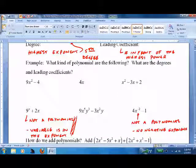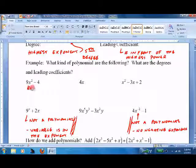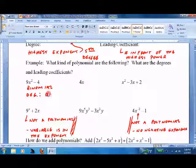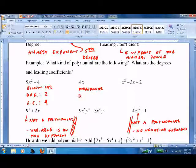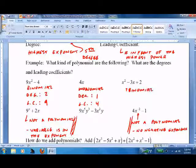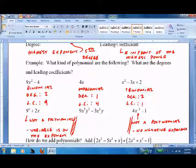Which ones are polynomials? Well, all the other four are polynomials. This is a binomial with a degree of two and a leading coefficient of nine. This is a monomial with a degree of one, which is hidden, and a leading coefficient of four. This is a trinomial with a degree of two and a leading coefficient of one.